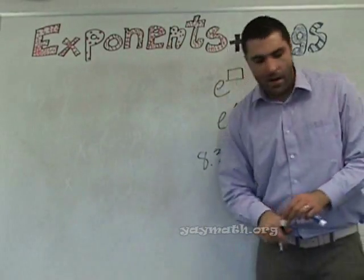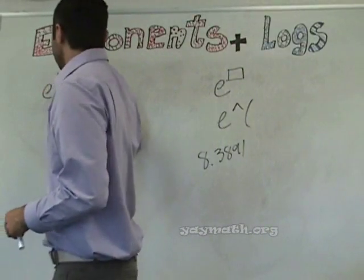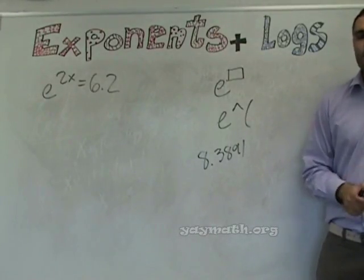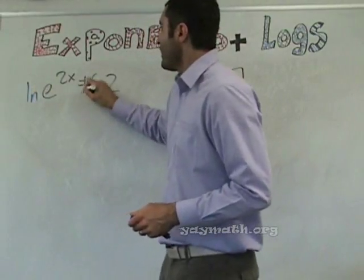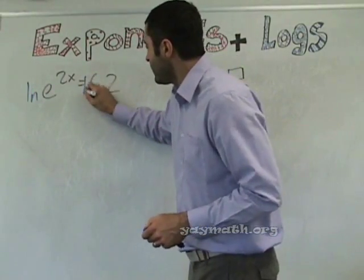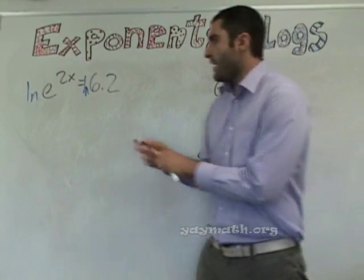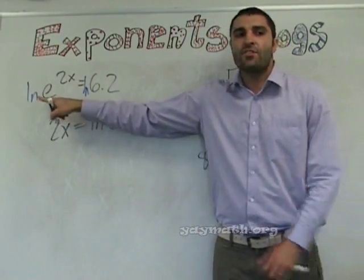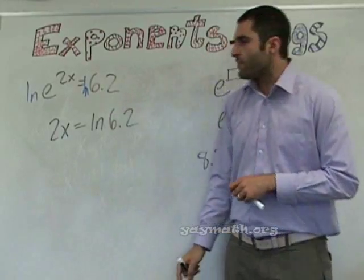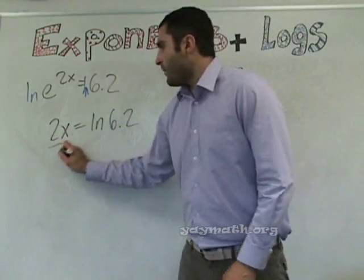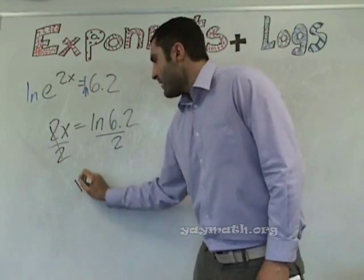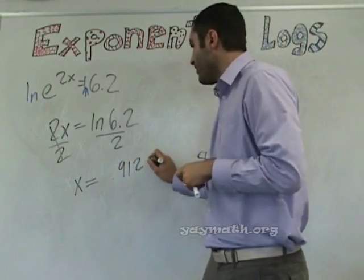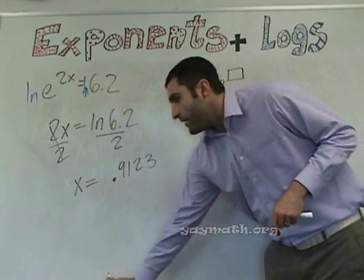The next problem: e to the 2x equals 6.2. Now we have e — how do we cancel e? Take the natural log of both sides. We'll get 2x equals ln 6.2. Once we get e by itself we took natural log of both sides. x equals — calculator gives approximately 0.9123. You can check that in the calculator as well.